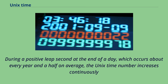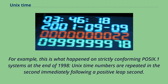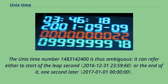During a positive leap second at the end of a day, which occurs about every year and a half on average, the Unix time number increases continuously into the next day during the leap second, and then at the end of the leap second jumps back by 1. For example, this is what happened on strictly conforming POSIX.1 systems at the end of 1998. Unix time numbers are repeated in the second immediately following a positive leap second. The Unix time number 1,483,142,400 is thus ambiguous — it can refer either to the start of the leap second or the end of it, one second later.